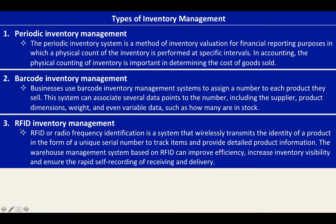The next type is RFID inventory management. RFID, or radio frequency identification, is a system that wirelessly transmits the identity of a product in the form of a unique serial number to track items and provide detailed product information. The warehouse management system based on RFID can improve efficiency, increase inventory visibility, and ensure the rapid self-recording of receiving and delivery.